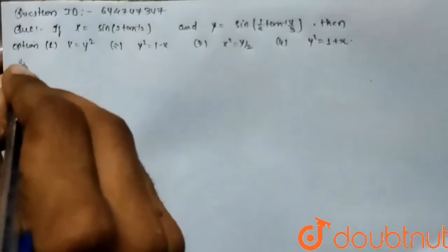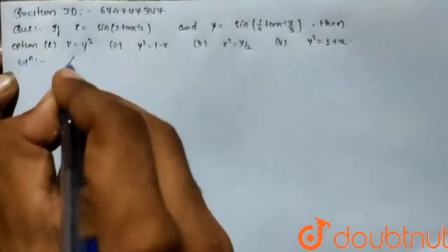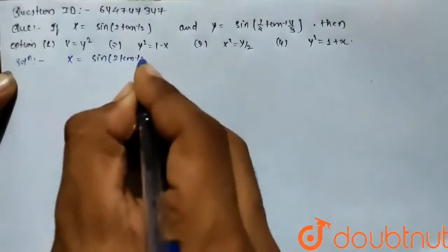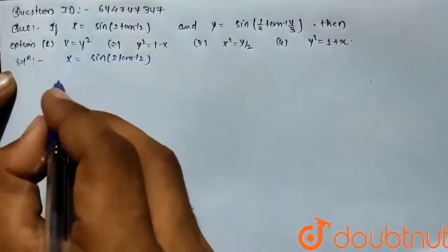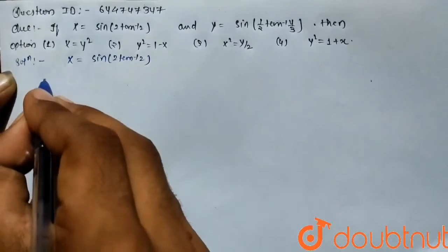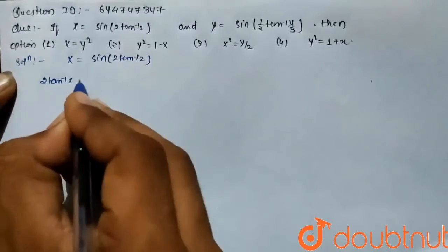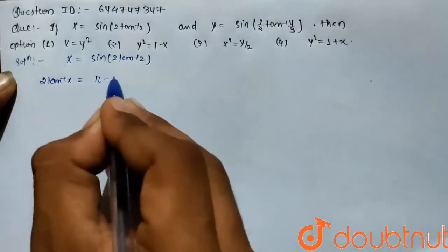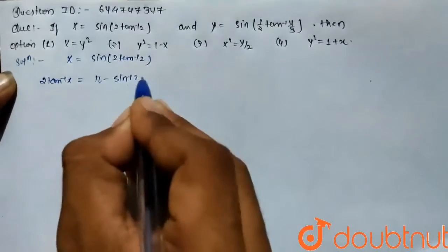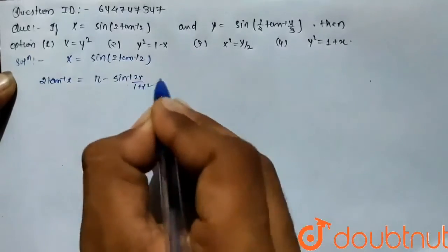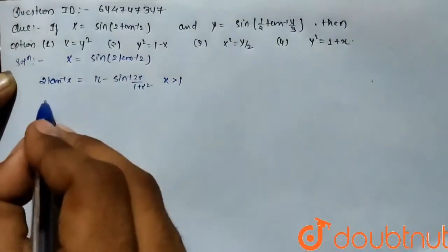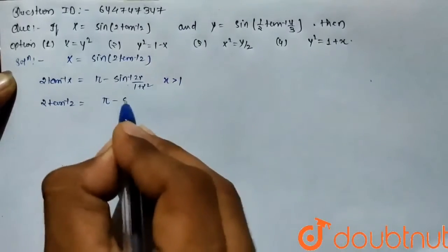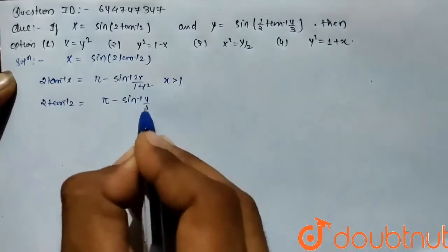So in solution part, we have given that x equals sin of 2 tan inverse of 2. So we know that here, 2 tan inverse of x equals pi minus sin inverse of 2x upon 1 plus x square for every x greater than 1. So the value of 2 tan inverse of 2 equals pi minus sin inverse of 4 by 5.